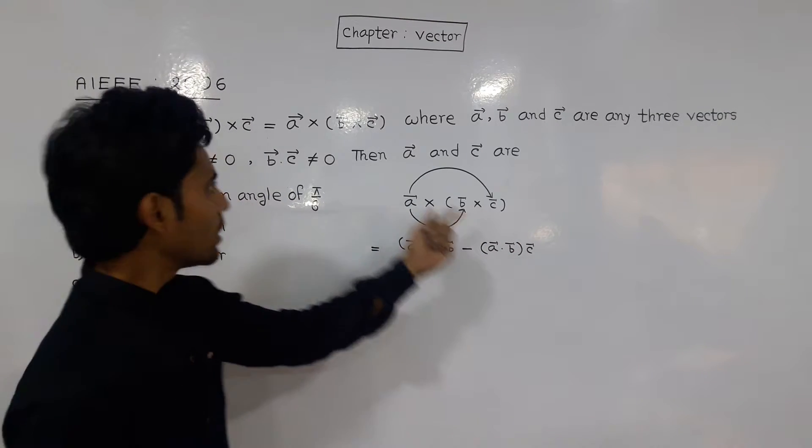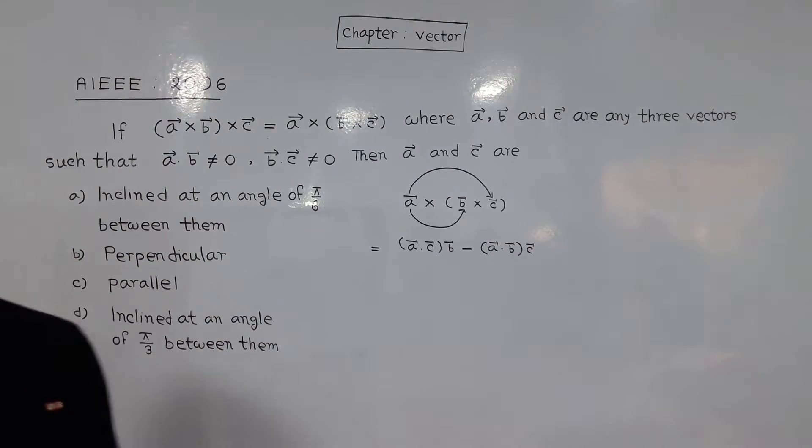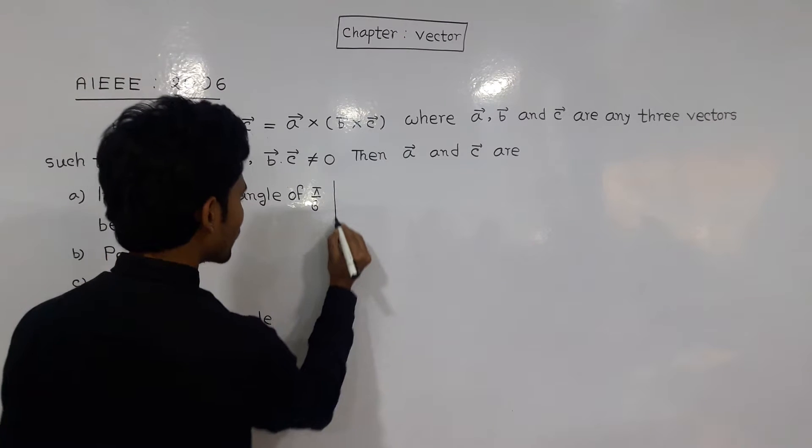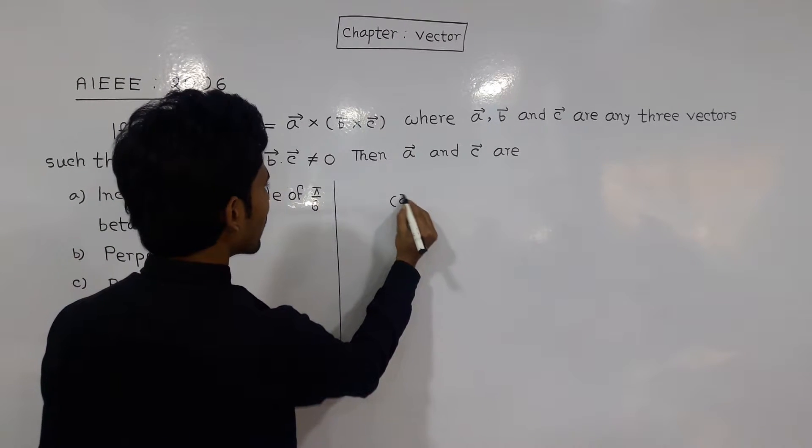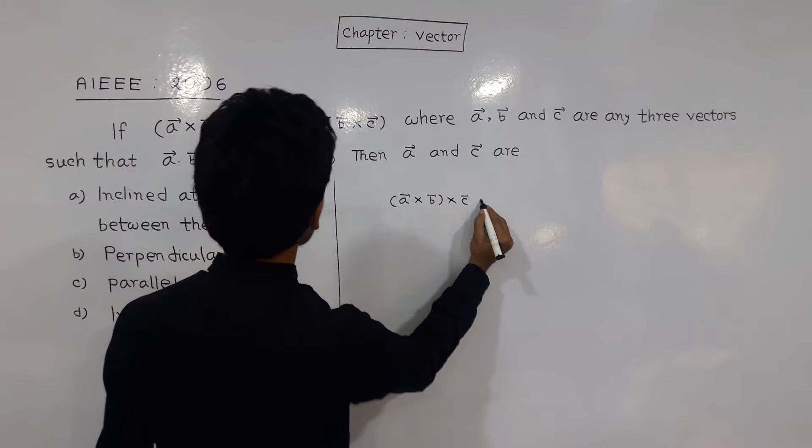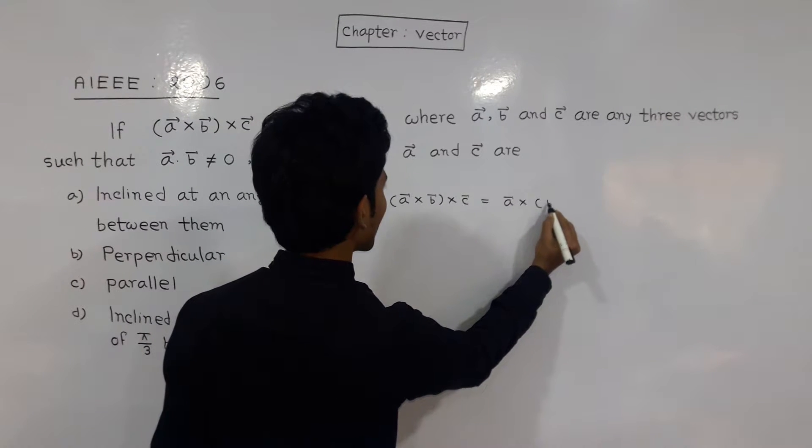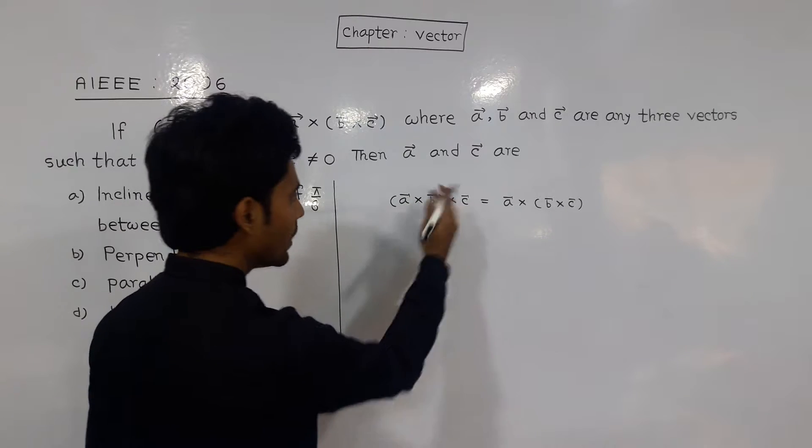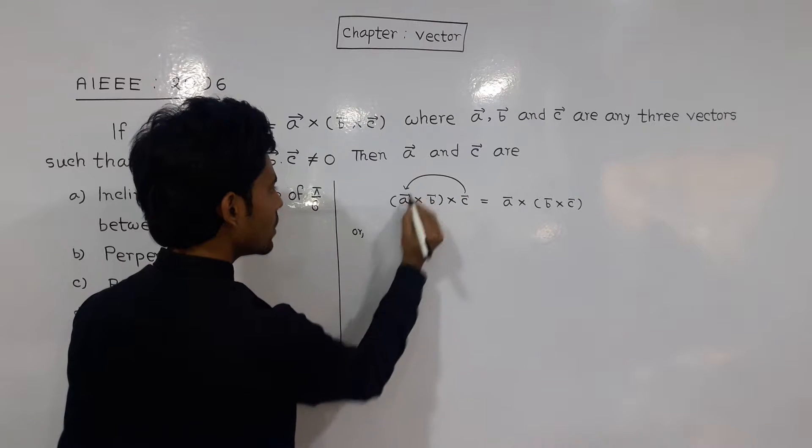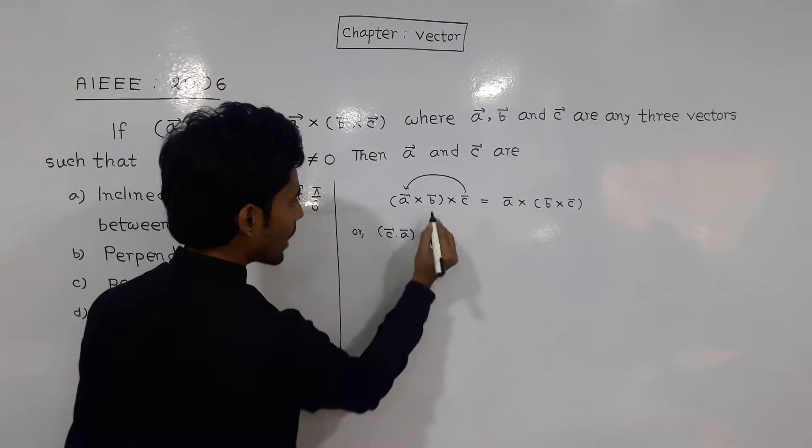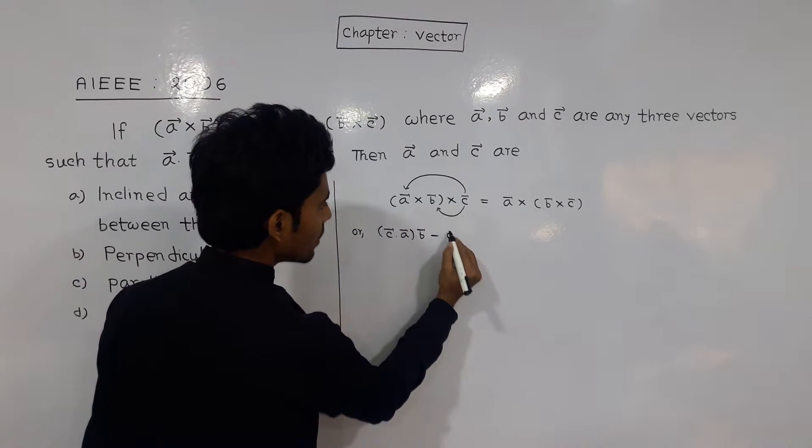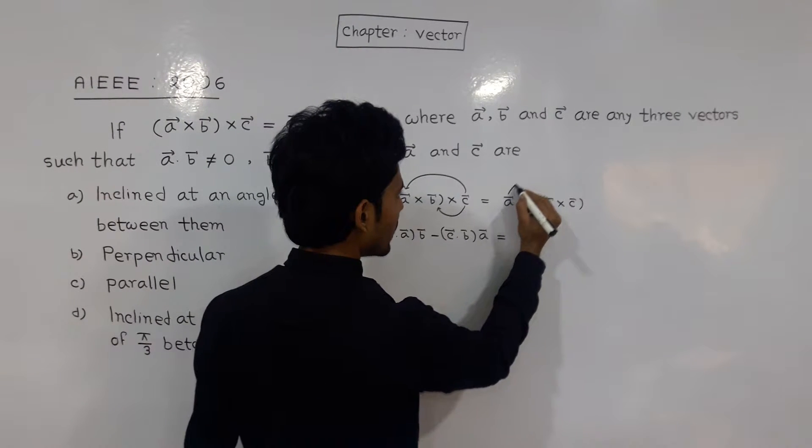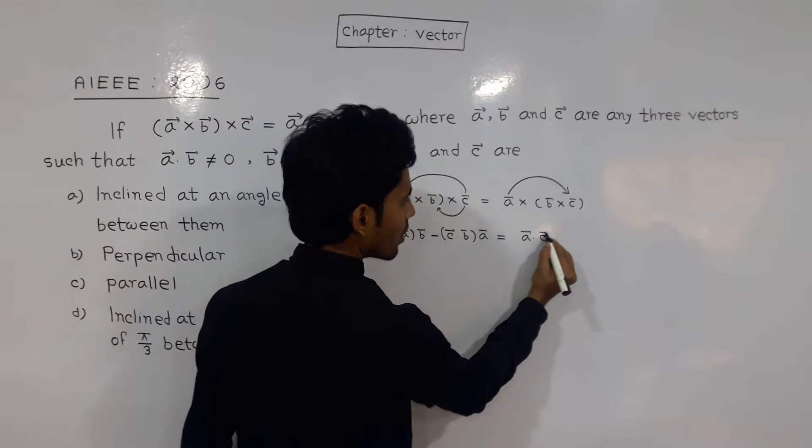So a cross b cross c equals a cross b cross c. Using the formula: c dot a times b minus c dot b times a equals a dot c times b minus a dot b times c.